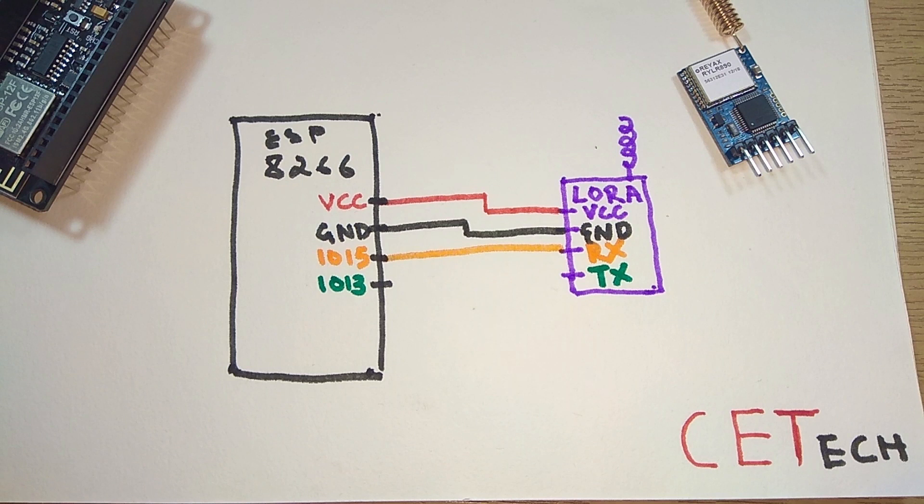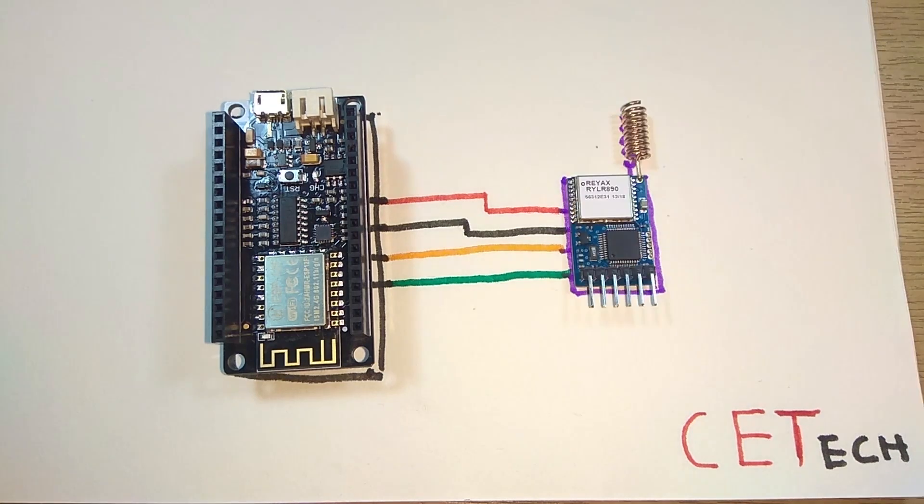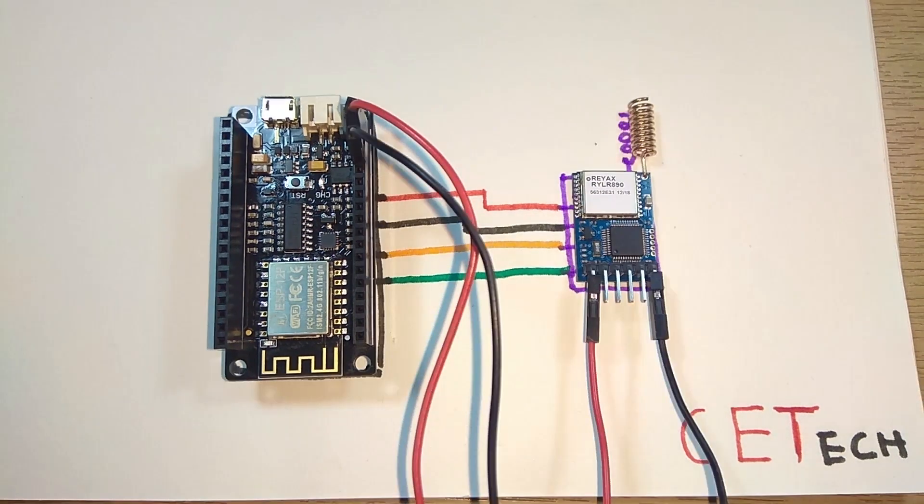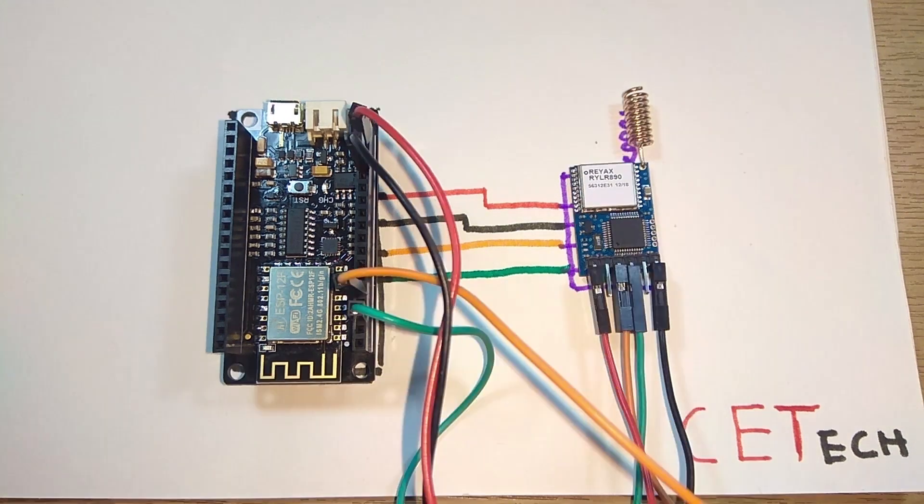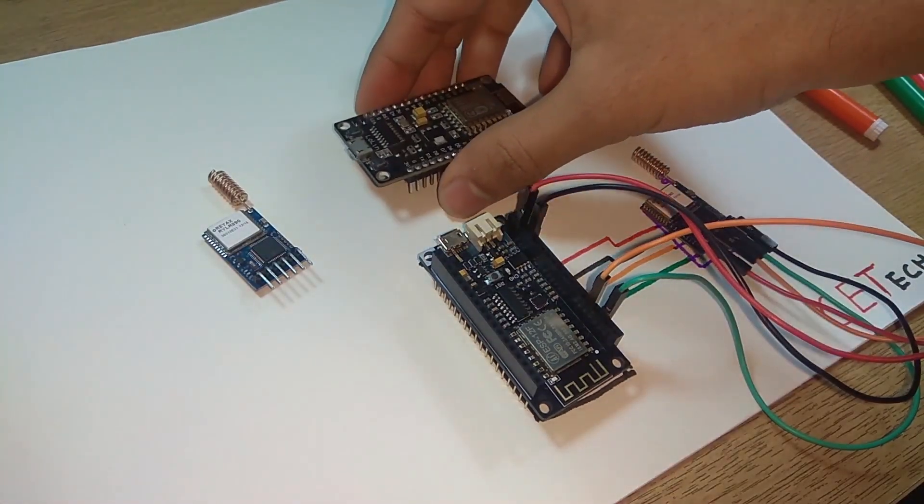In similar fashion, IO13 will be connected to the TX of the LoRa module as IO13 will act as the RX for the ESP module. Now connecting the wires according to the diagram and the color codes, we have connected all four wires. I took the other LoRa module and ESP module and connected both of them according to the same diagram.